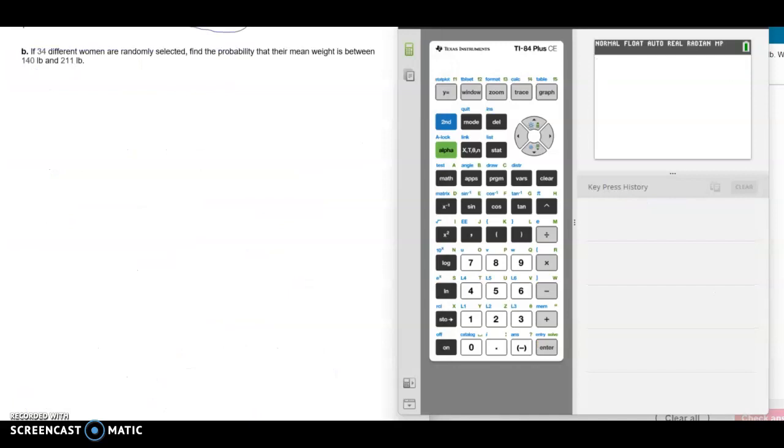Let's look at part B. It says if 34 different women are randomly selected, find the probability that their mean weight is between 140 pounds and 211 pounds.